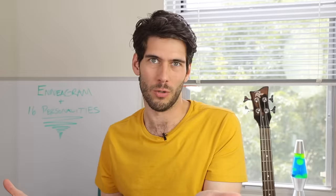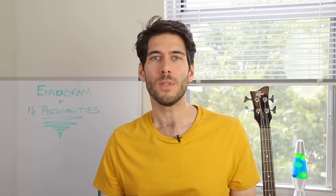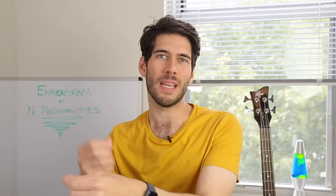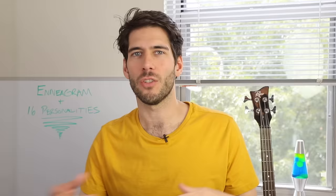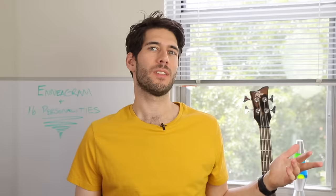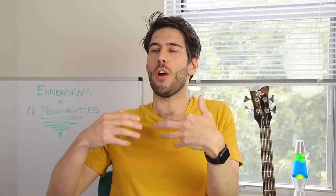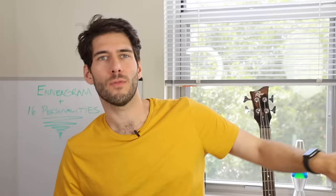Next up we have the Enneagram type three, which is called the achiever, sometimes called the performer. They are very success oriented — they really want to be affirmed by achieving stuff. It's like their self-worth is bound up in the stuff that they accomplish. They're always trying to get attention, trying to distinguish themselves from other people, and they really want to be admired and to impress others. They also know how to play the social game — they can be very politically minded when it comes to handling other people. With type three, I'm actually thinking that any of the 16 personalities could identify as a three if they are driven enough to accomplish stuff. Any type can be driven to accomplish things and get validation from their accomplishments. You can make the argument that extroverts are more likely to be a three, but I still think any type could be a three.